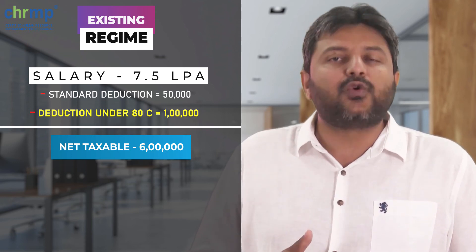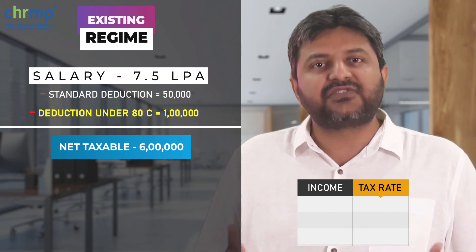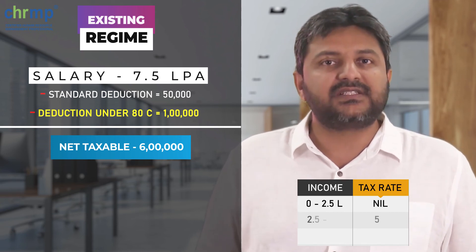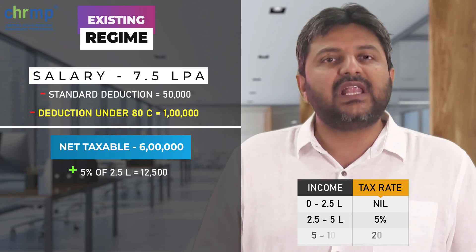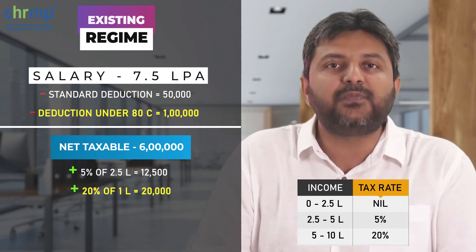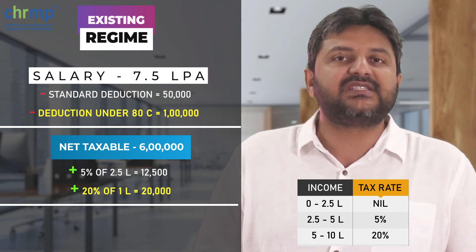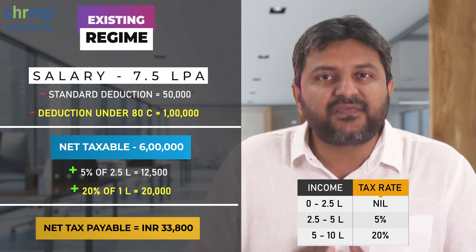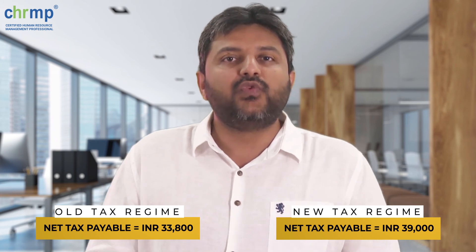The net tax is now calculated on Rs. 6,00,000 and not Rs. 6,50,000 as discussed earlier. Calculating the tax again as per the old tax regime: 0 to 2.5 lakh — no tax; 2.5 to 5 lakh at 5% amounts to Rs. 12,500; 5 to 10 lakh at 20% — as we are calculating on 6 lakh, the person pays 20% of 1 lakh which is Rs. 20,000. Net tax payable is Rs. 32,500, plus 4% health and education cess, amounting to Rs. 33,800 — which is Rs. 5,200 less than the new regime. This is the exact saving we achieved by switching from old to new regime in the earlier case, and now we can achieve the same in the old regime itself through efficient planning.